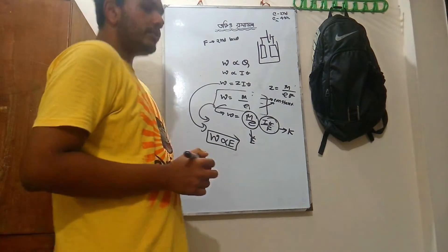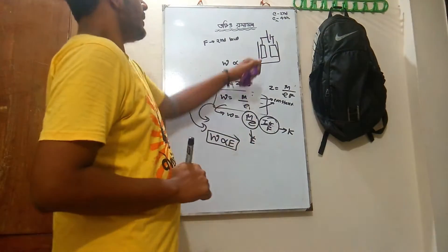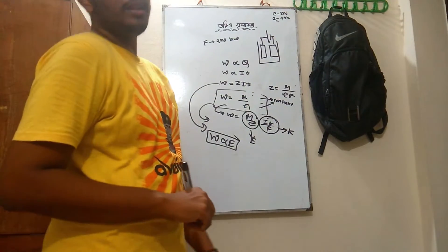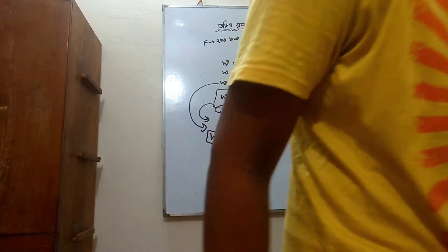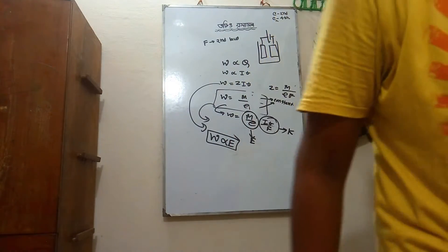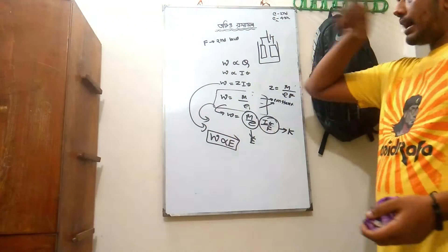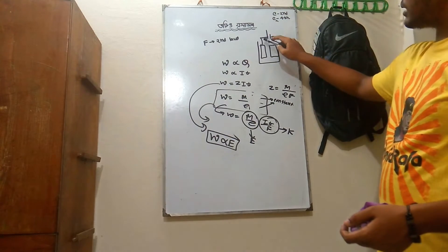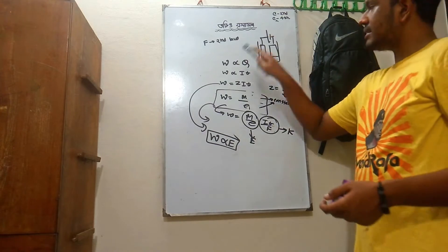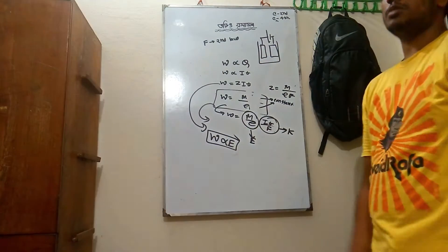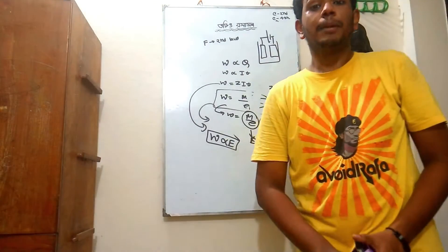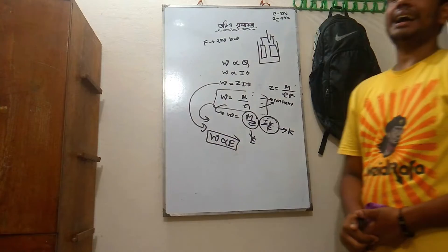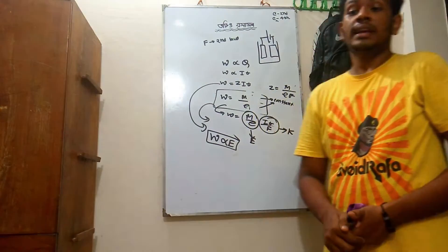What will happen? The battery will create electricity. This is an electrolytic cell. However, our new product is a chemical cell. This should be a chemical cell.